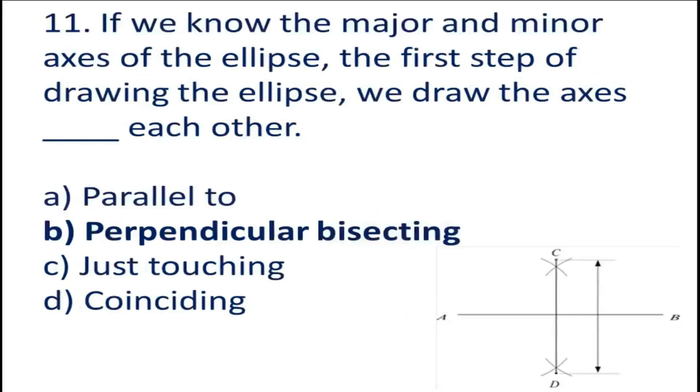Question number 11: If we know the major and minor axis of the ellipse, the first step of drawing the ellipse is to draw the axes blank each other.